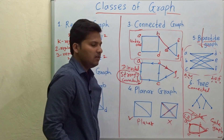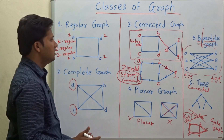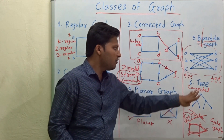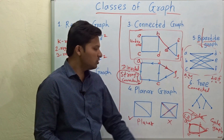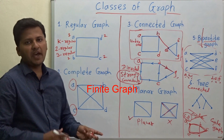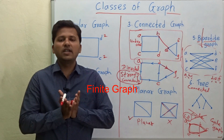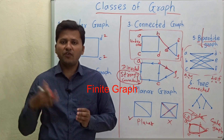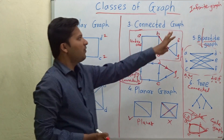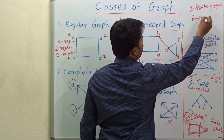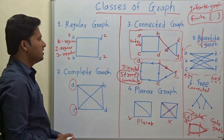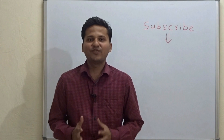So these are the classes of graphs: regular graph, complete graph, connected graph, planar graph, bipartite graph, tree, and cycle graph. There is also the finite graph class — in a finite graph the number of vertices must be finite. If there are infinite vertices then it is called an infinite graph. In a finite graph the number of vertices are finite, meaning they are countable.